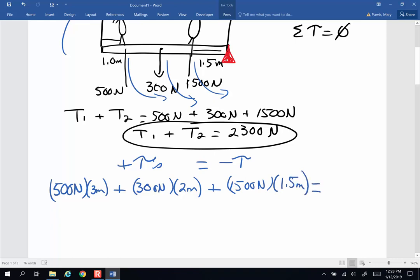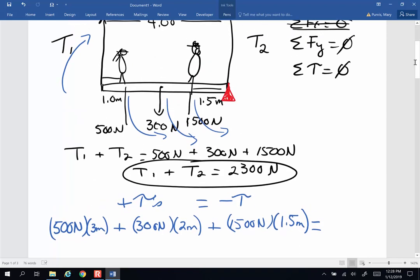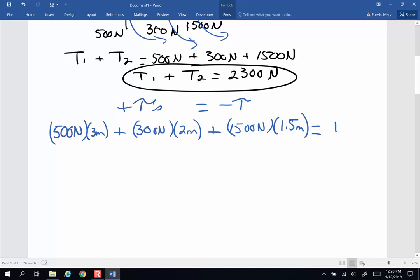Now all of those are going to equal the torque in the other direction. And the only torque rotating it in the other direction is tension one. And that is four meters from my designated pivot. So that's going to be equal to tension one times four meters. So all I have to do now is simplify. Three times five, this is 1500 newton meters. Two times three, 600 newton meters. One and a half times 1500 is 2250 newton meters. When I get all that added together, I get 4350 newton meters equals tension one times four meters.